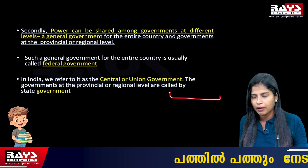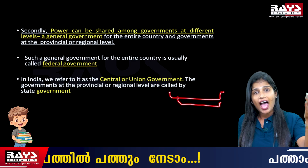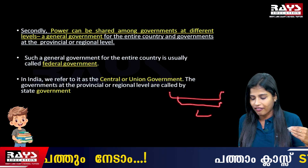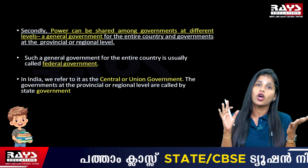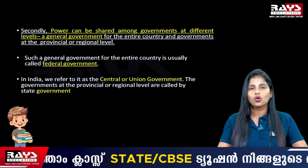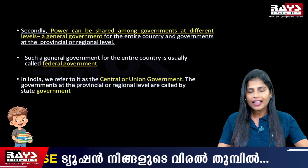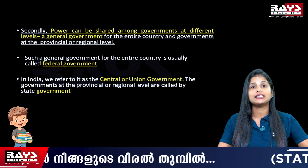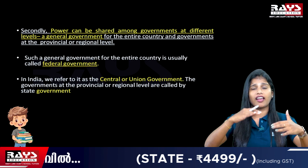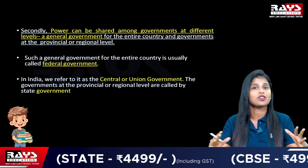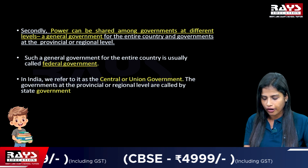In the case of India, we have a central government for the entire country, a state government at the regional level, and at the local level we also have local self-government, known as Panchayati Raj or municipality. The general government for the entire country is known as the union government or federal government, and such a system where power is divided between different levels is known as the federal system of government.